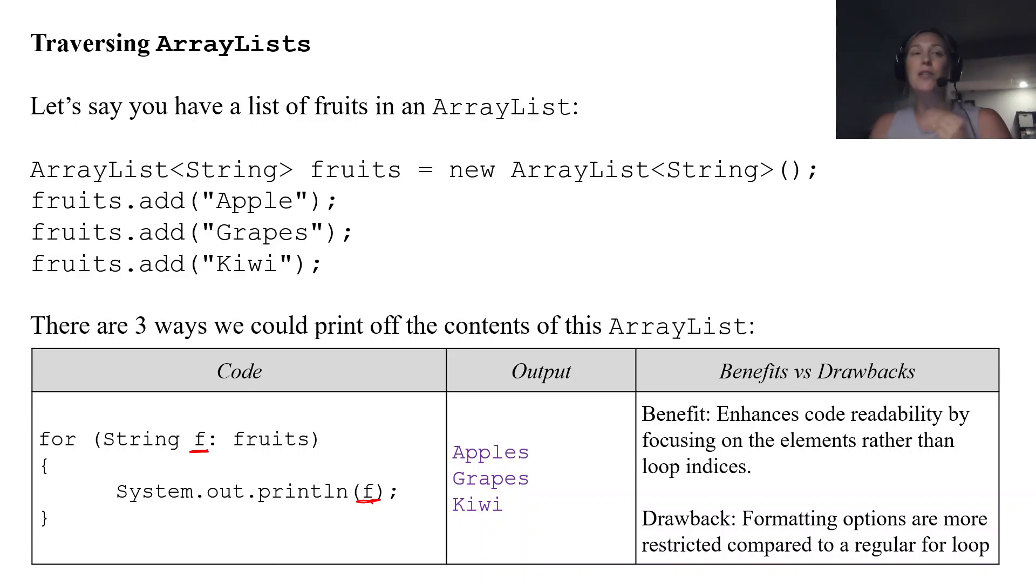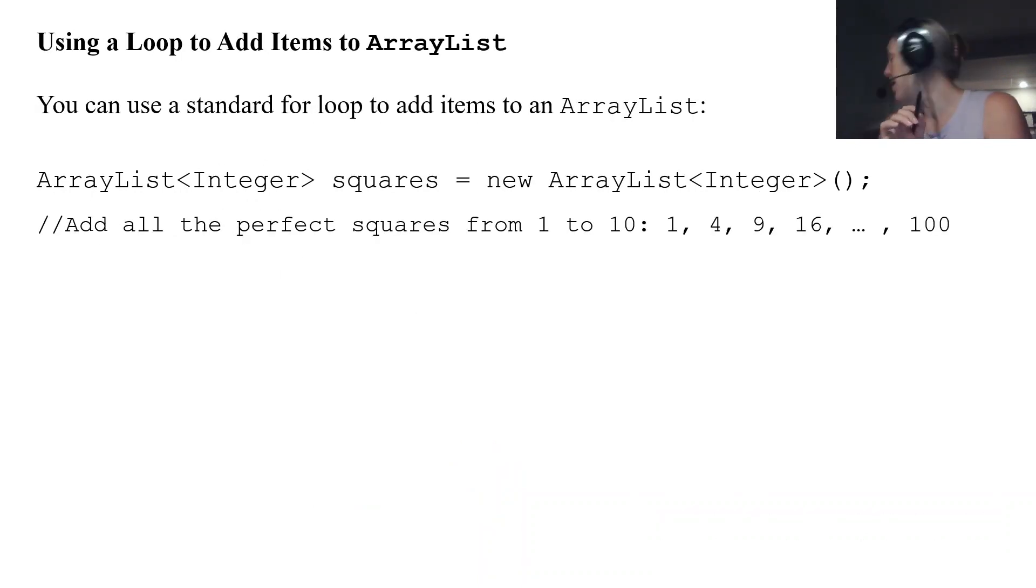So those are the three ways we can traverse an ArrayList. And in these examples, we just traverse them to display the contents. Now let's talk about traversing them to add items.